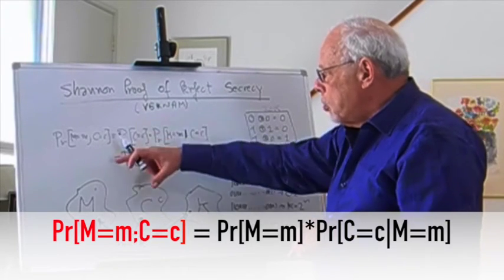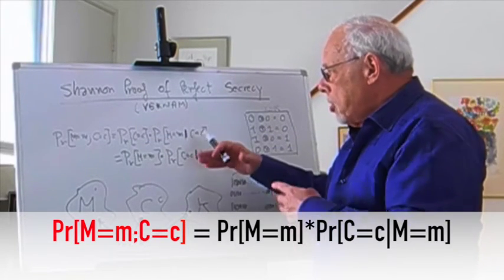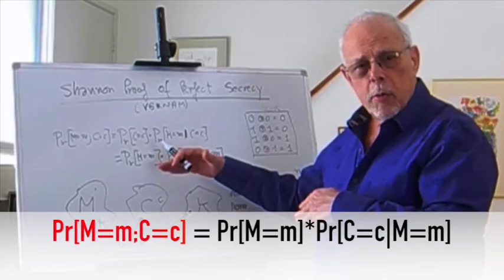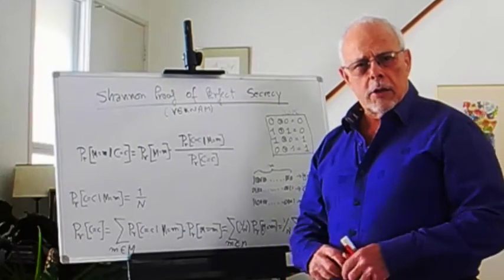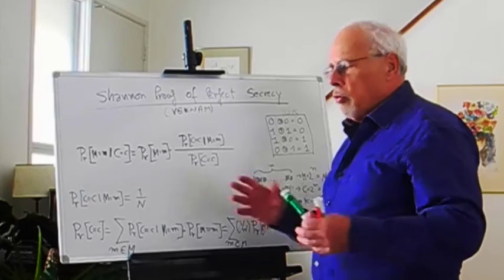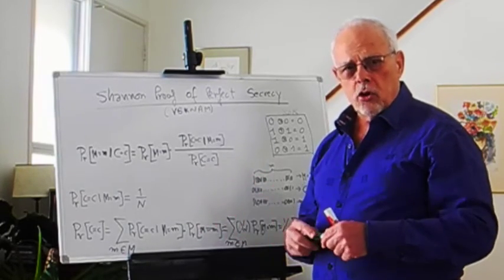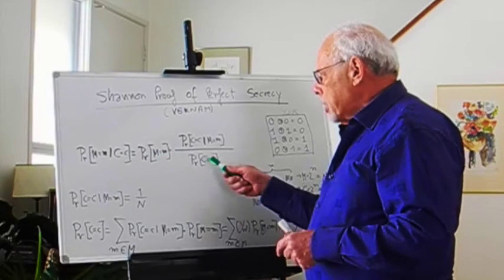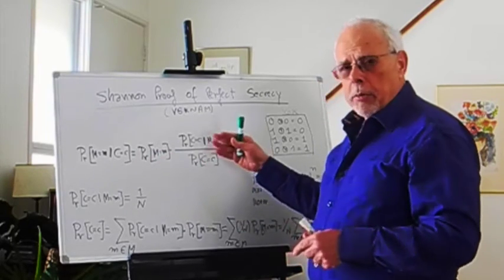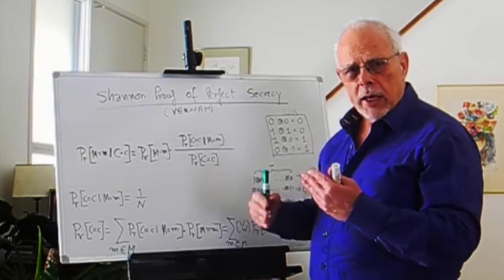Shannon used this, took this equation and rearranged. So Shannon rearranged the relationship, the Bayesian relationship, to look like this. It's the same as what we had before, algebraically rearranged.